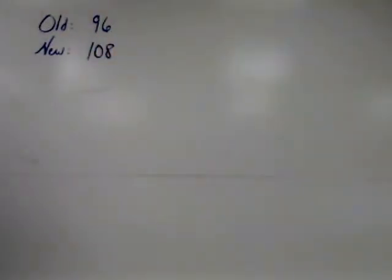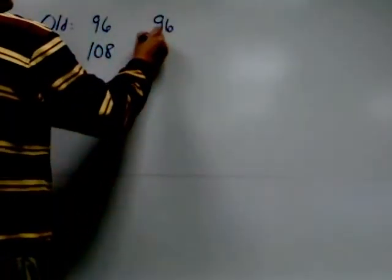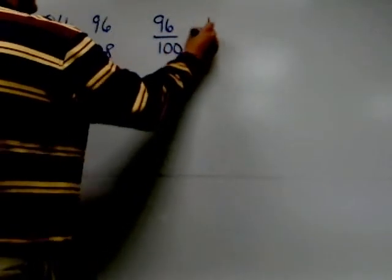So we'll use the old over 100 equals new over x formula, since we now have an old and a new. So I do 96 over 100 equals 108 over x.